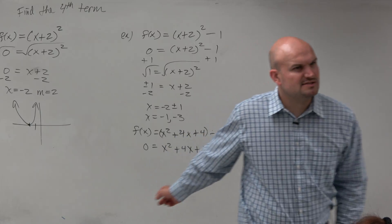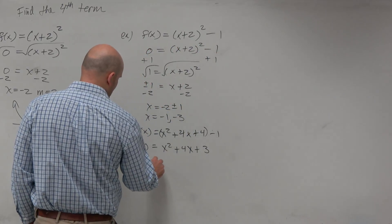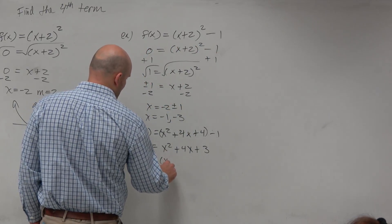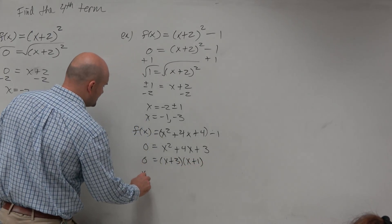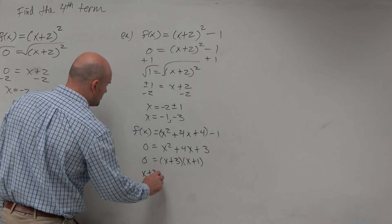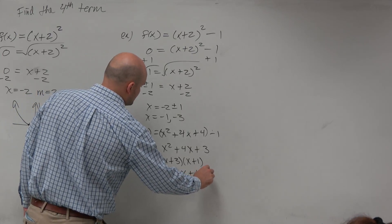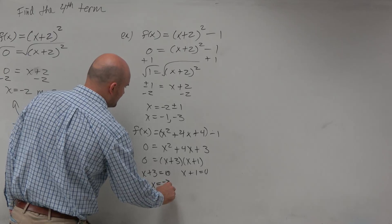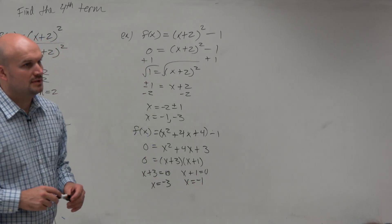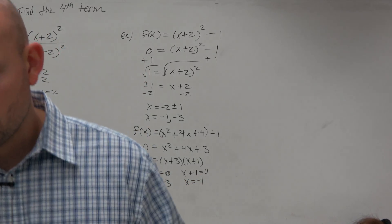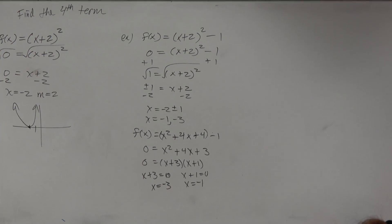Do we see — is this factorable? Yes, it's factorable. So we could say 0 equals x plus 3 times x plus 1. Now you can use the zero product property. And therefore, x equals negative 3 and x equals negative 1. So my question to you guys is on the first example — is this factorable?